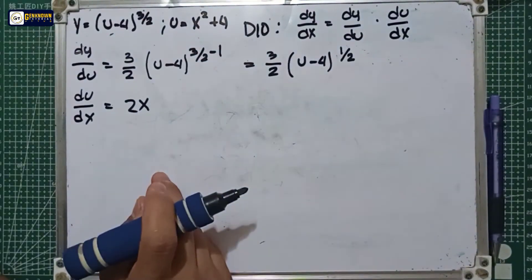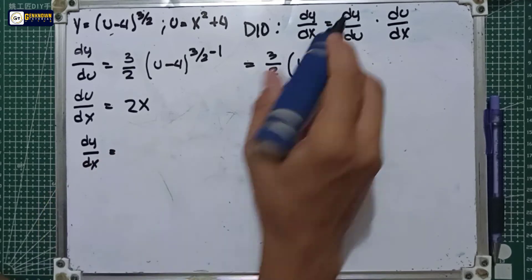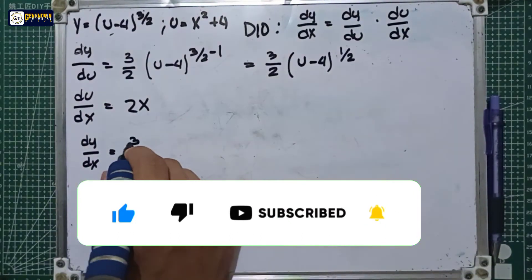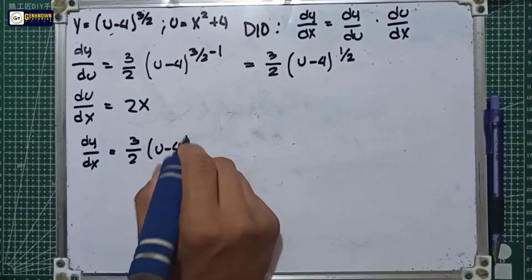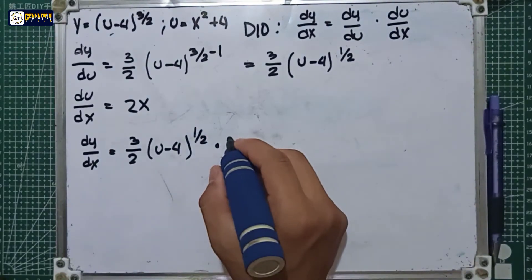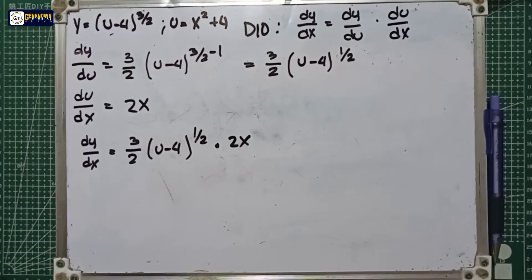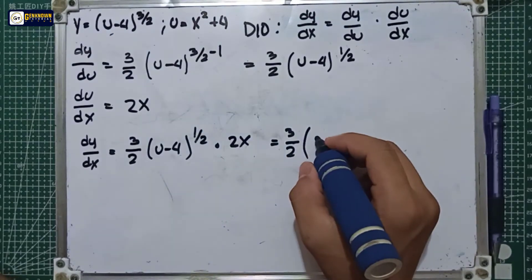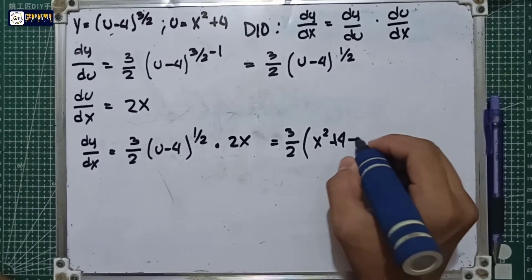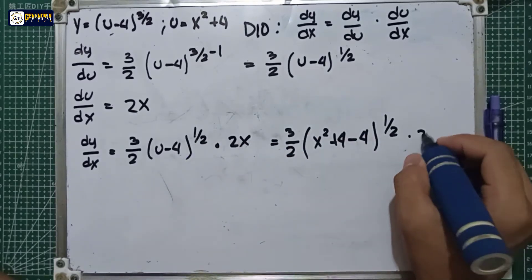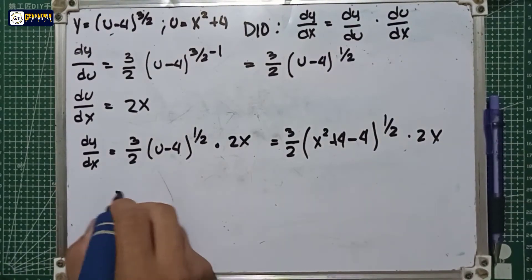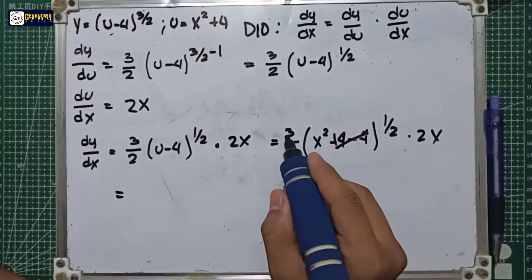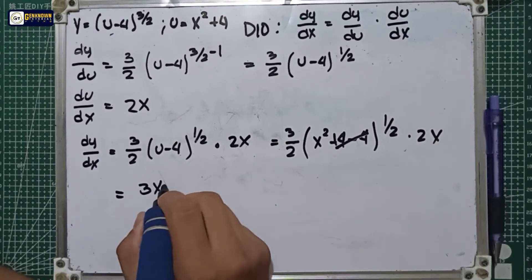The next step is to use the chain rule. So dy over dx is equal to dy over du times du over dx. That is 3 over 2 times u minus 4 raised to 1 over 2, multiplied by 2x. Then we substitute the value of u, so u equals x squared plus 4, giving us 3 over 2 times x squared plus 4 minus 4, raised to 1 over 2, times 2x. Since x squared plus 4 minus 4 equals x squared, we have 3 over 2 times x squared raised to 1 over 2, times 2x.